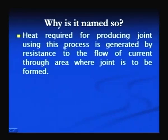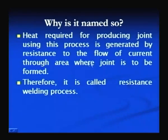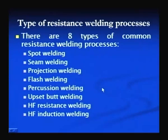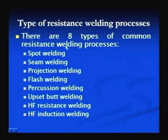Why is it called resistance welding? Because the heat required for producing the joint is generated by the resistance to the flow of current through the contact area where the joint is to be formed. Therefore, this process is called resistance welding process. There are various types of resistance welding processes used in different industrial applications, but eight are the common ones. Out of these eight, the first three types are the most common: spot welding, seam welding, and projection welding.